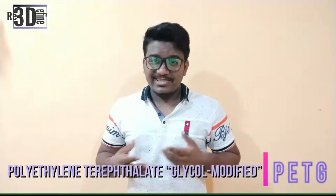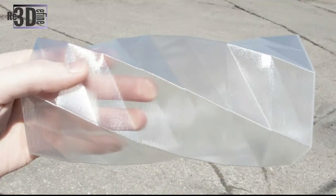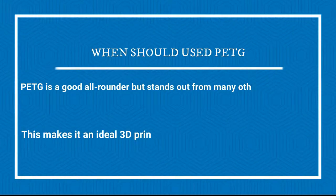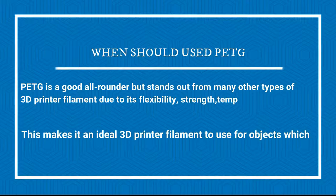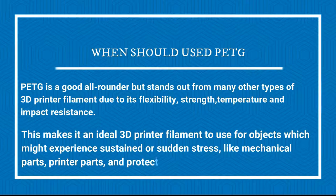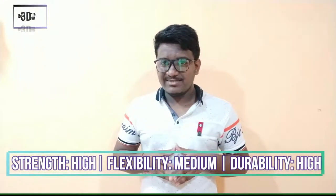The third filament in the common category is PETG — Polyethylene Terephthalate Glycol. It is the most commonly used plastic in the world. The G in PETG stands for glycol-modified, resulting in a filament which is clearer, less brittle and easier to use than its base form. Well known as the polymer used in water bottles, it is also found in clothing fibers and food containers. PETG is often considered a good middle ground between ABS and PLA. It stands out for its flexibility, strength, and temperature and impact resistance, making it ideal for mechanical parts, printer parts and protective components. It has high strength with medium flexibility and high durability.